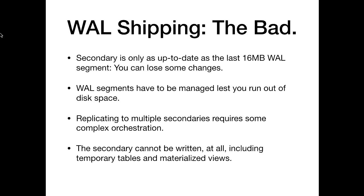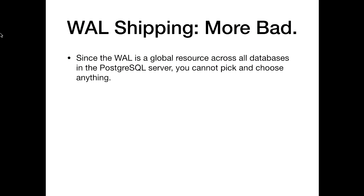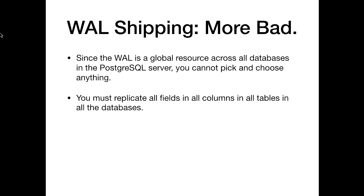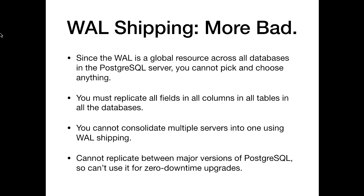You can't write to the secondary at all — including temporary tables, which a lot of analytical packages like to do. You can't create new views. It's an exact mirror image and it has to stay that way. It's an exact mirror image, so you can't pick and choose what you copy — all the databases, all the tables, everything across the entire cluster has to be copied. You can't consolidate multiple servers down to a single data warehouse using this. And you can't replicate between different major versions of Postgres — it works for minor versions, but you can't use it for version upgrades, so you can't go from 9.6 to 10.